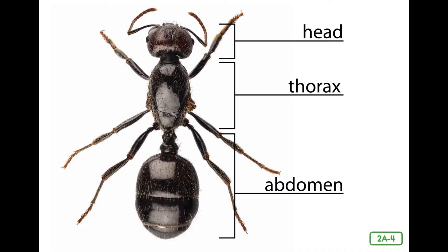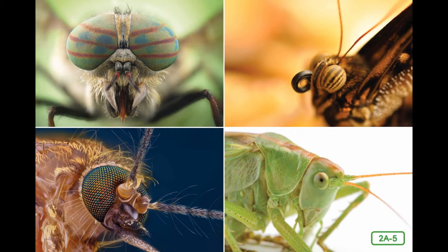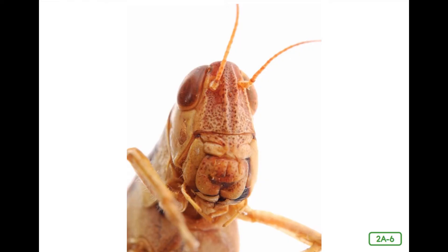The head is the center of an insect's senses, but different kinds of insects can have very different looking heads. The thorax is the middle part of the insect's body. The abdomen is the end of the insect's body, farthest away from the head. What do you notice about the heads of these common insects? Do they look anything like yours? Do they have eyes? Yes they do, but they are different from your eyes. For most insects, like this cricket, big eyes are located on the side of the head. Many insects also have smaller simple eyes on the tops of their heads. Look closely at this cricket's head — can you see its eyes?